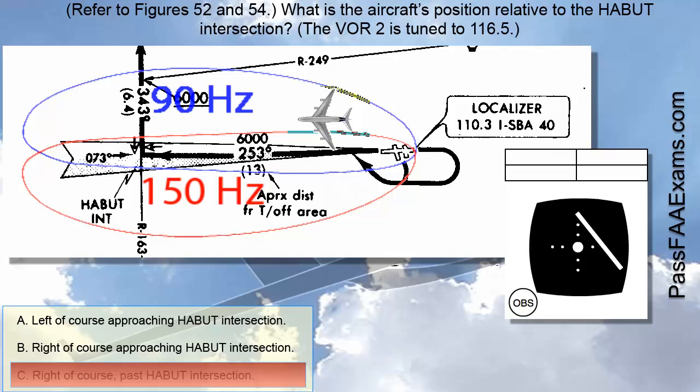So, the only answer remaining is right of course and approaching the HABIT intersection. Answer B.